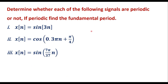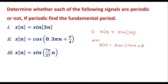Let me take the first example: x(n) = sin(3n). We know that any discrete signal x(n) is represented in standard form as a·cos(ω₀n + φ), where φ indicates the phase shift. Comparing this expression, we can say that ω₀ = 3. A discrete signal is said to be periodic if it satisfies the condition ω₀ = 2π·(m/N). Here, ω₀ = 3 cannot be expressed in terms of 2π·(m/N). Therefore, the signal x(n) is not periodic — it is an aperiodic signal.